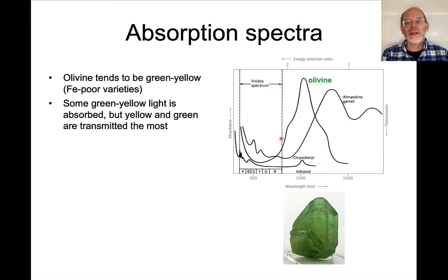Now, what do minerals look like? Here, for example, is the absorption spectrum for olivine. Olivine is typically a beautiful green. And what's happening is it's absorbing in the red part of the spectrum.